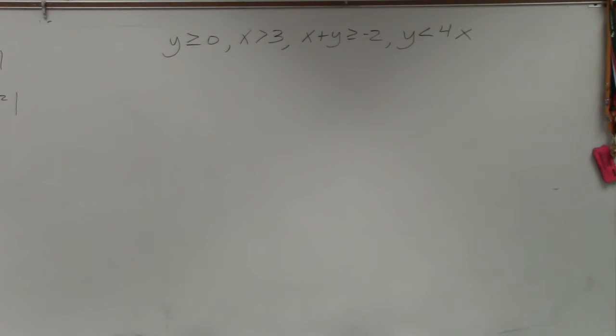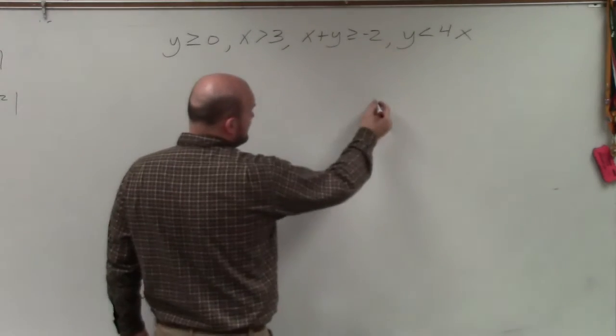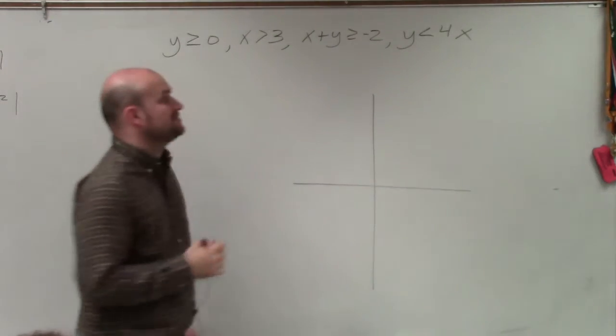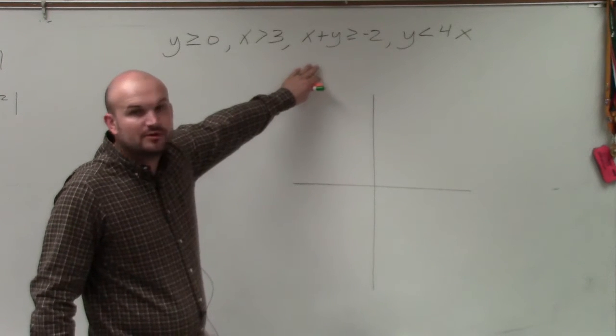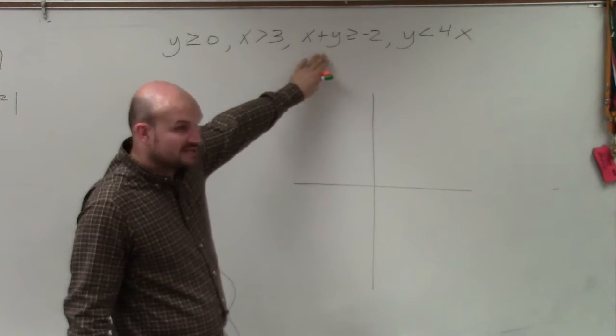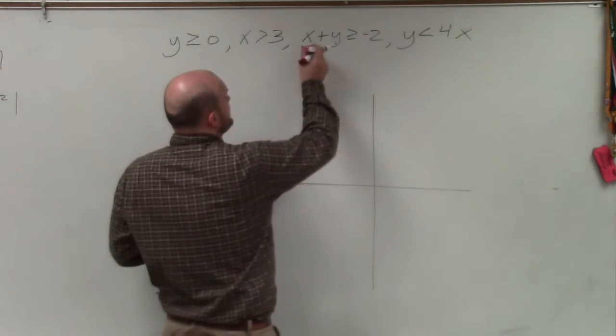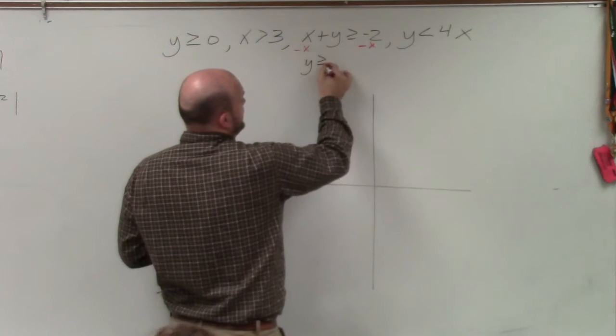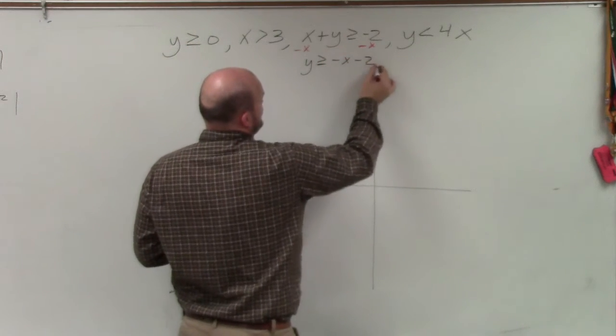Well, in a problem like this, you're going to have to do all of them. The main important thing is to make sure that I have my equations that have a y and an x in slope-intercept form. You guys can see this is not in slope-intercept form. So to do that, I need to subtract an x, so I have y is greater than or equal to negative x minus 2.